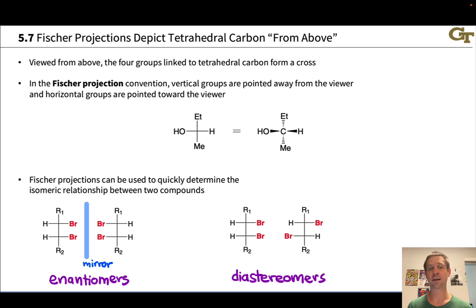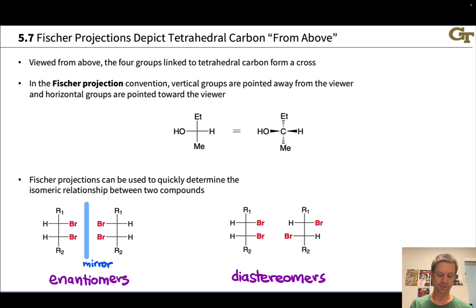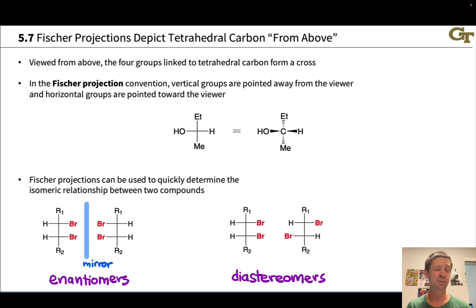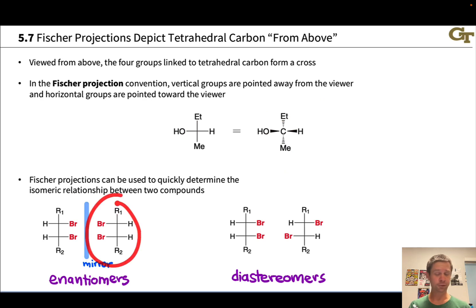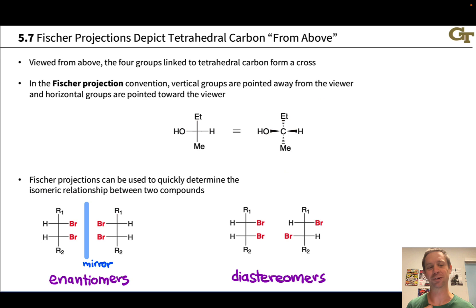One nice thing about Fischer projections is we can use them to quickly determine the isomeric relationships between two compounds. Here we have this 1,2-dibromo compound and a similar looking 1,2-dibromo compound. Assuming R1 and R2 are not the same, these are actually chiral compounds. If we reflect this structure through a mirror aligned perpendicular to the screen, we'll get this structure. This shows us that the two structures are related as mirror images. Going through our isomer process - they have the same molecular formula, the same connectivity, they are mirror images - therefore they are enantiomers.